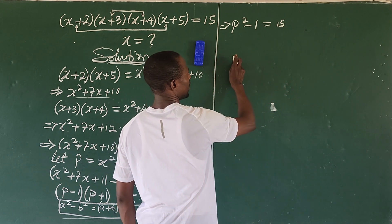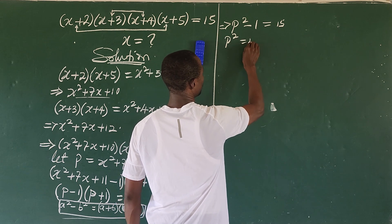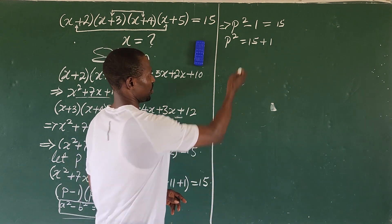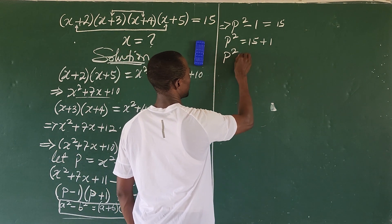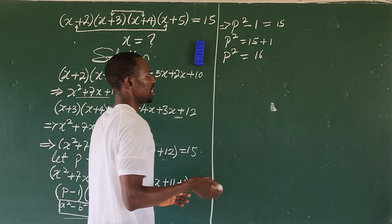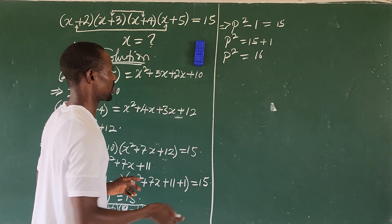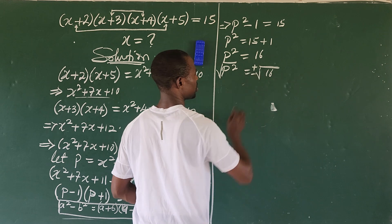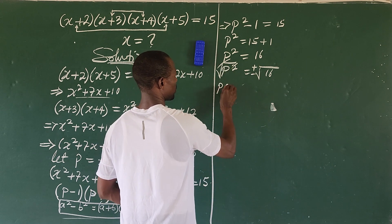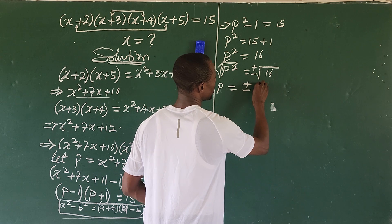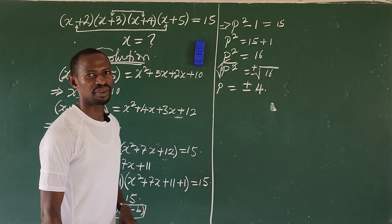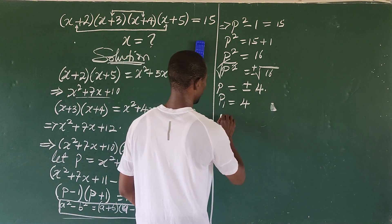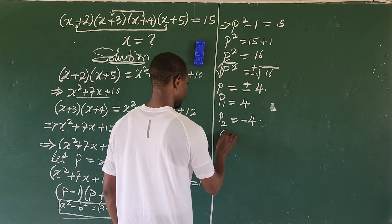Moving the 1 to the other side gives p² = 15 + 1 = 16. Taking the square root of both sides: p = ±4. So we have two cases: p₁ = 4 and p₂ = −4.